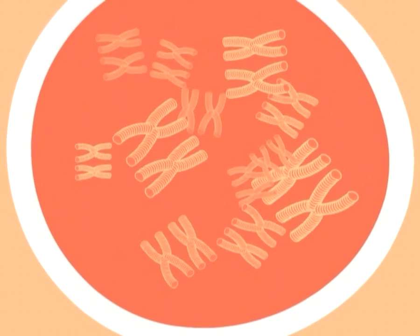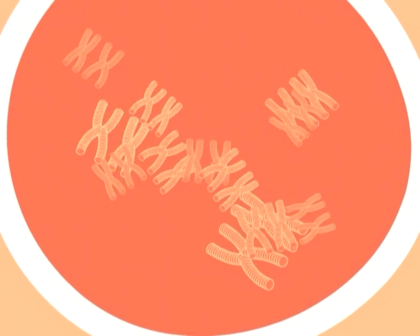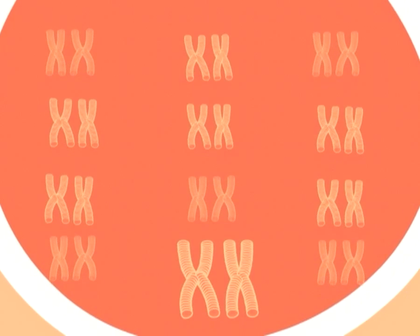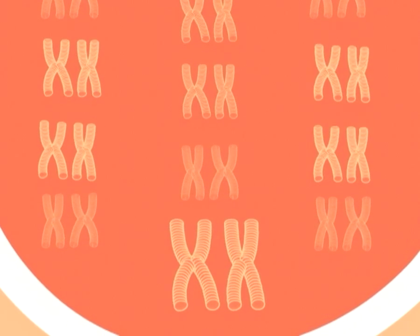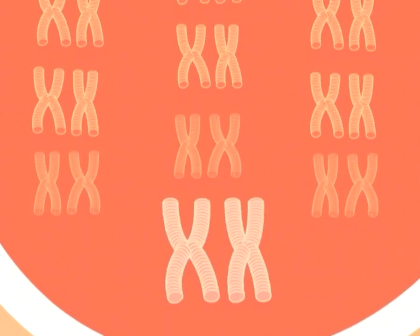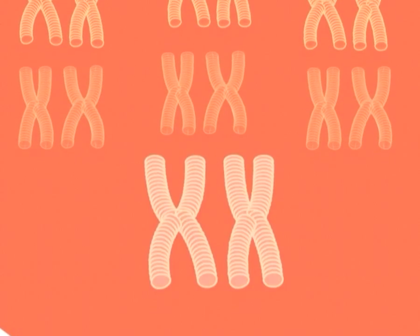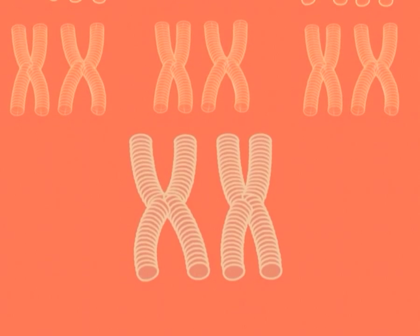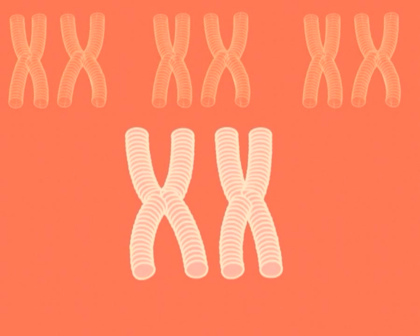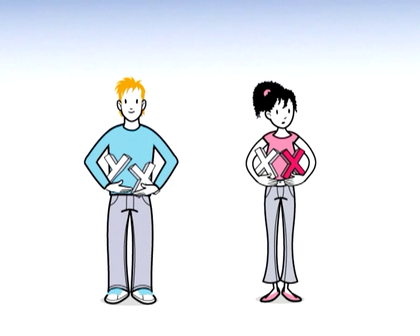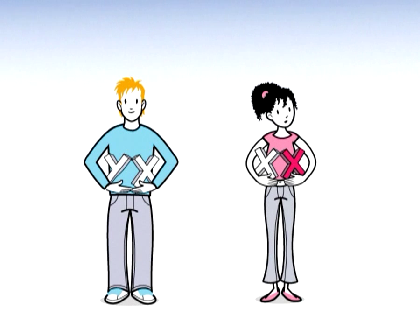If we organize all of the chromosomes in any cell, we can see that there should be 22 pairs and also a pair of sex chromosomes. I have two Xs, like all women. The sex chromosomes are what decide whether a person is born a man or a woman. A man has an X and Y chromosome, whilst a woman has two X chromosomes. Everyone gets one sex chromosome from each one of their parents.